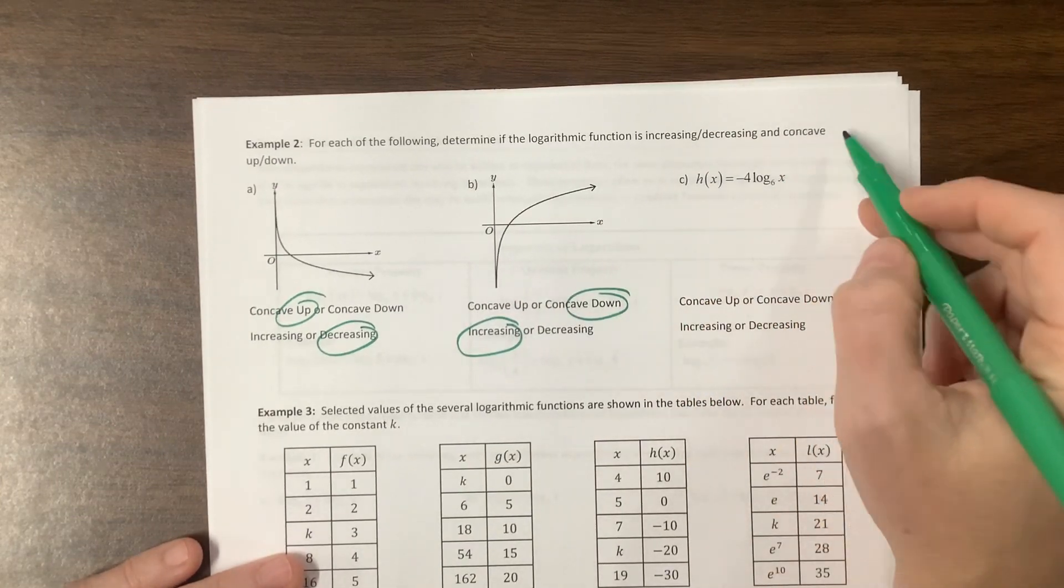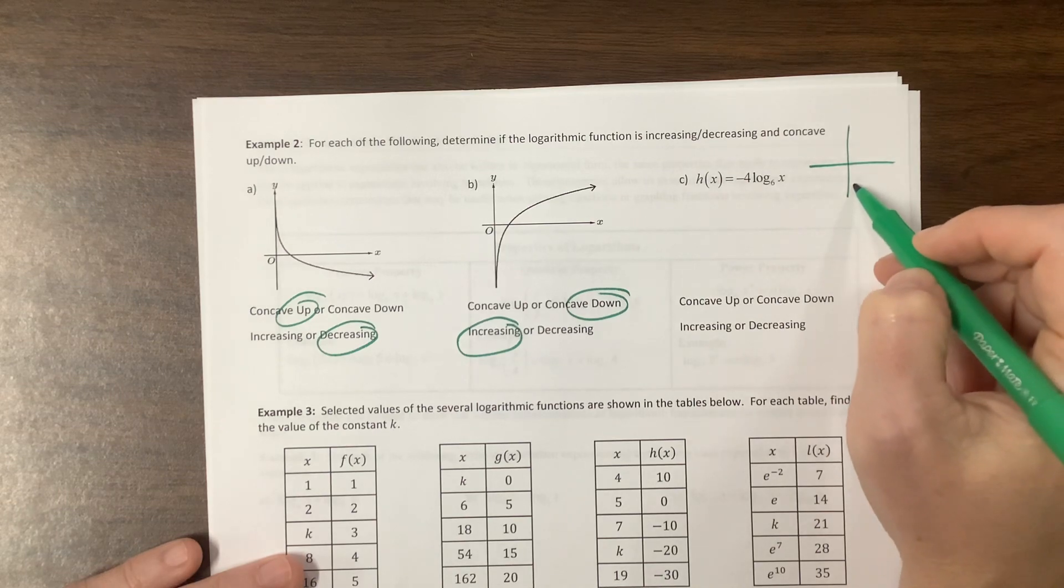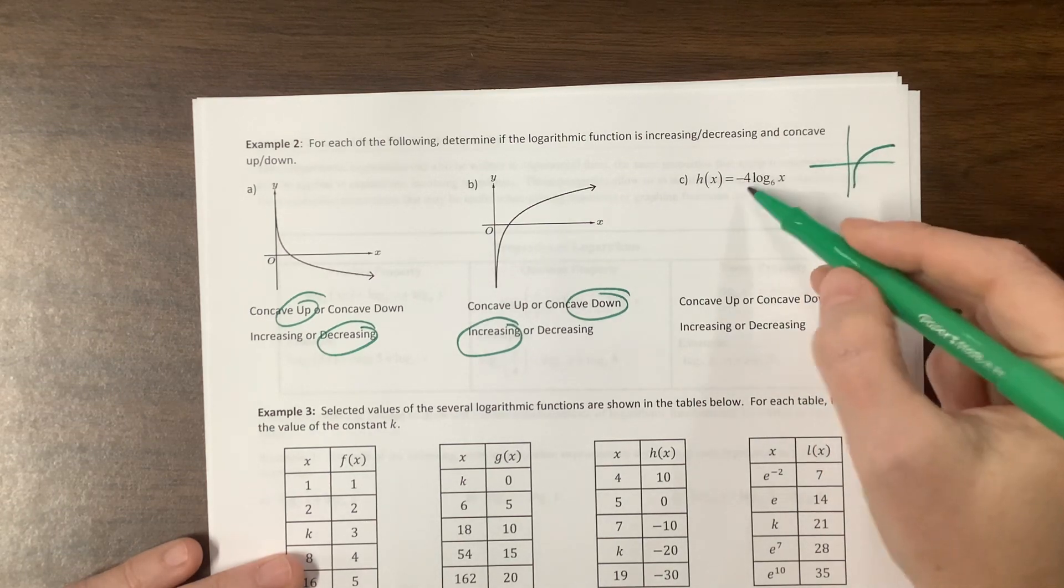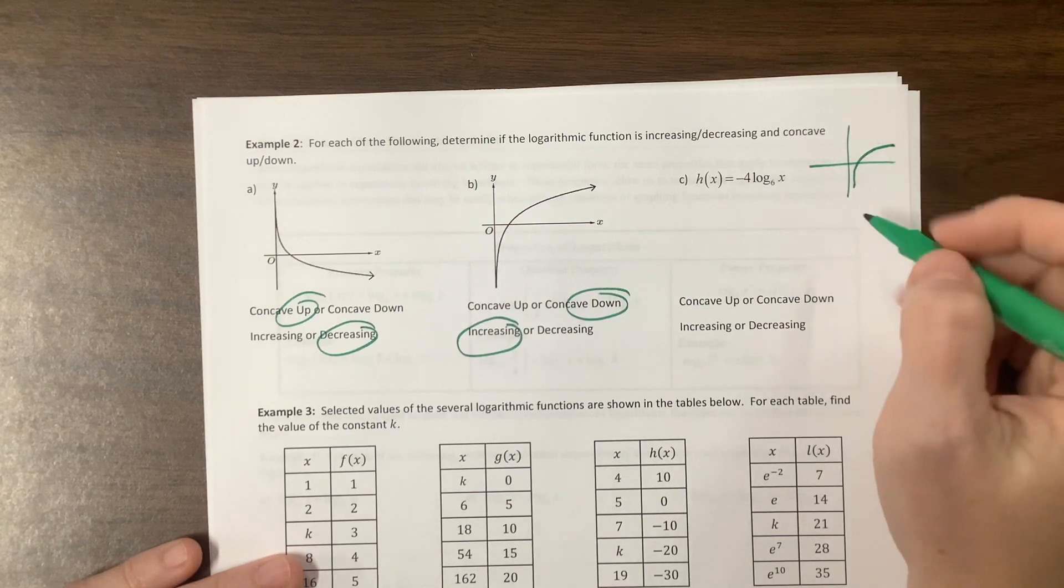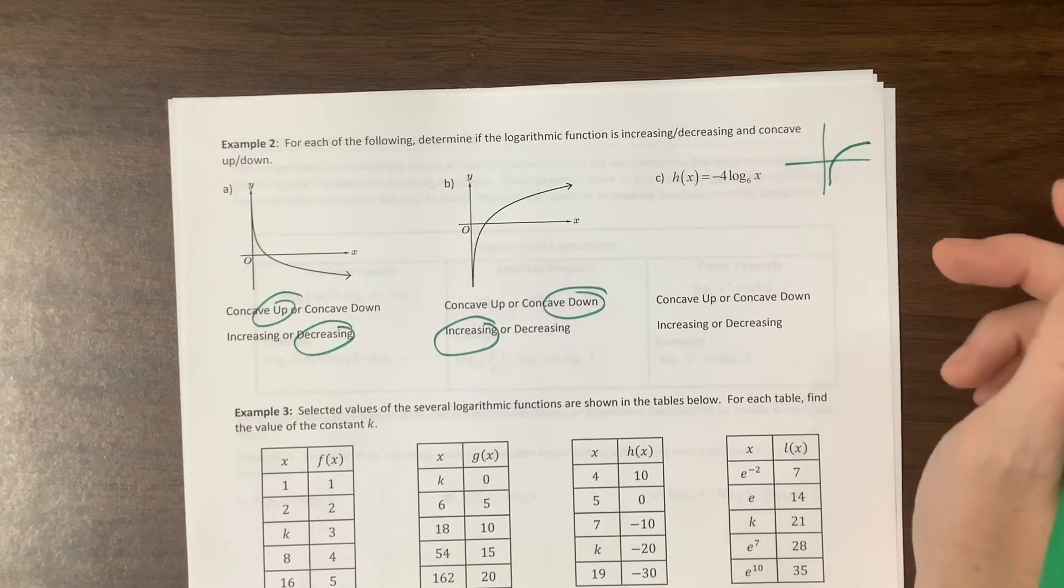This one, okay, so let's see what happens. Our basic log function initially looks something like this, but then the negative out in front means that we've reflected it over the x-axis. We can think about it too.